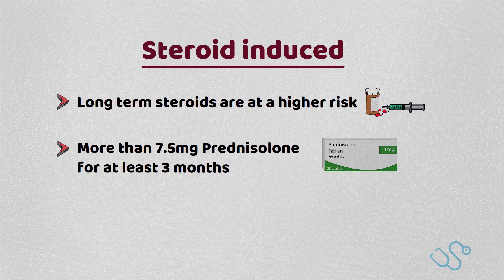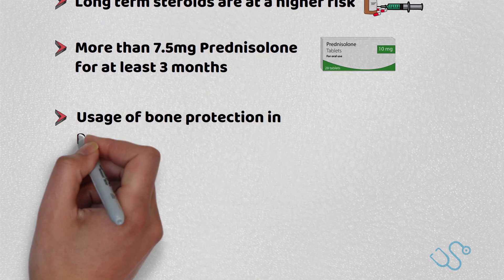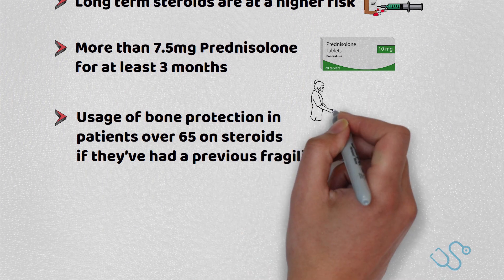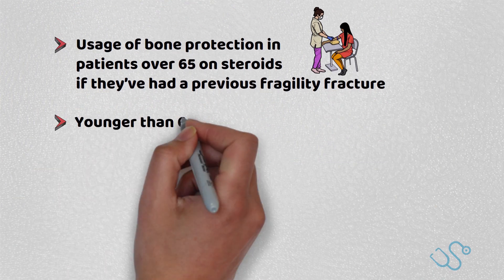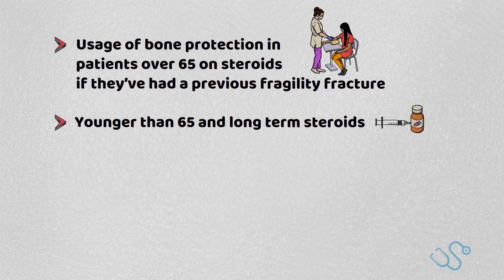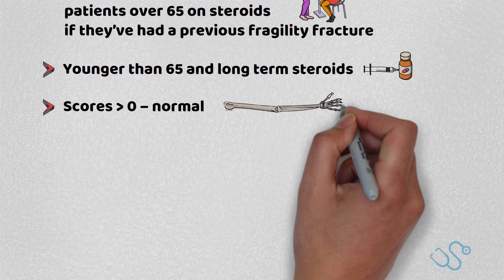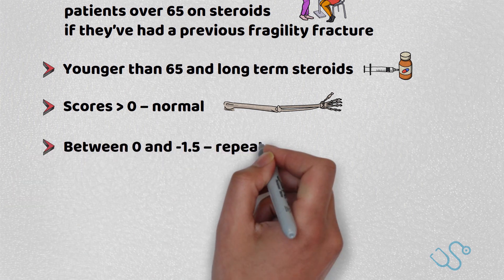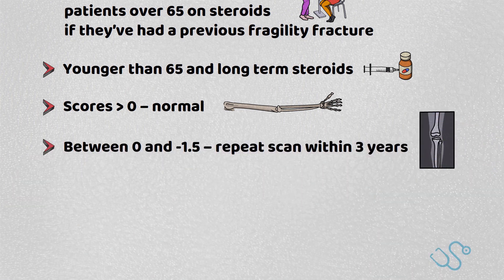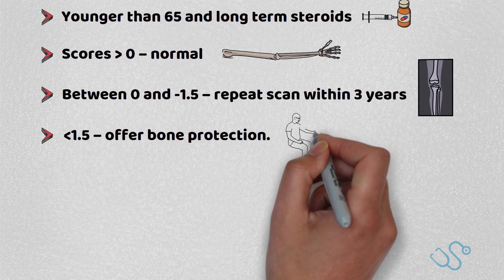Additionally, and confusingly, the T-scores for these patients also slightly vary. NICE recommend the usage of bone protection in patients over 65 on steroids if they've had a fragility fracture, but if they're younger than 65 and on long-term steroids, then the patient should be offered a DEXA scan, where a score over 0 is considered normal; if it's between 0 and minus 1.5, the patient will be scanned again in three years; and if it's lower than minus 1.5, then to offer bone protection.